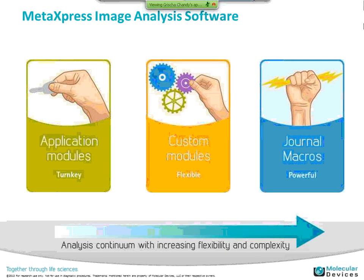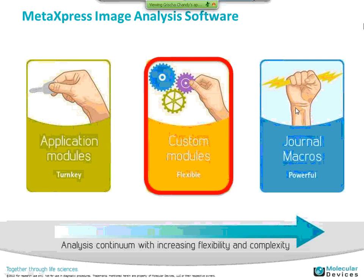On the analysis side, MetExpress takes those images and converts them into numerical values. We have application modules, which are turnkey for easy and fast assays. We also have journals, which are macros and are very powerful, allowing you to do nearly any image processing step. We launched some time back our custom modules, which drive flexibility — bridging the gap between application modules and journals, giving you a flexible tool that, once created, doesn't need a lot of editing and can be reused like application modules.